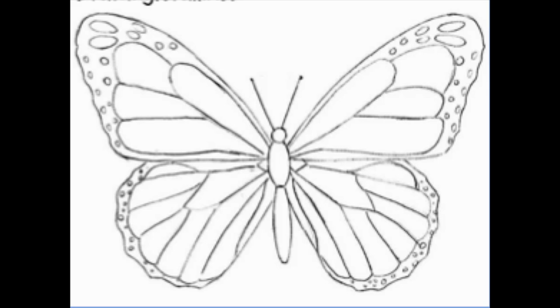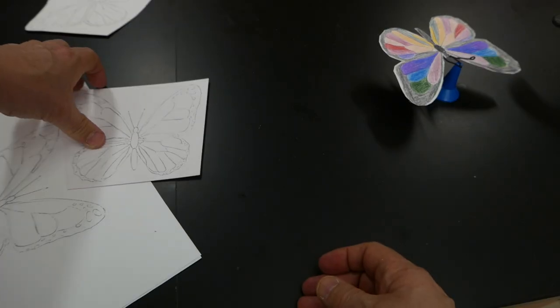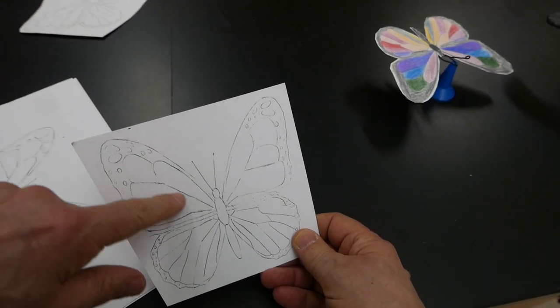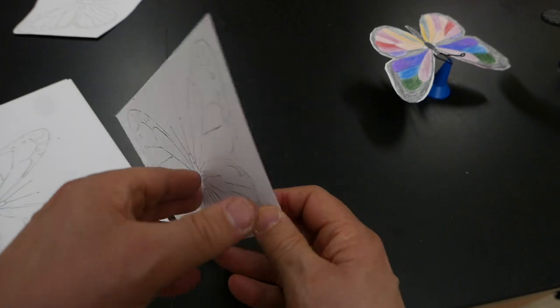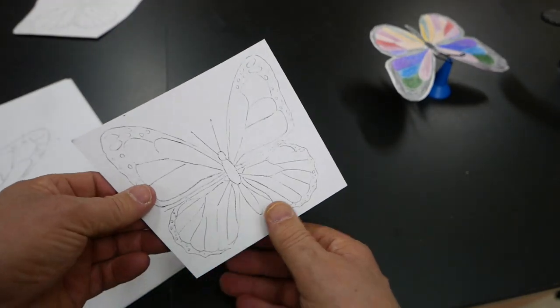I started with a regular picture of a butterfly, put it on my computer, and then stretched its wings forward. I glued that to heavy stock cardboard, cut it out, added some color to it.